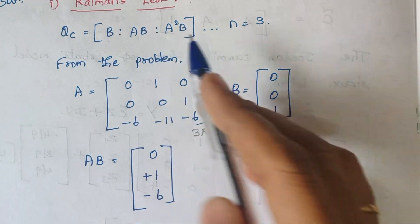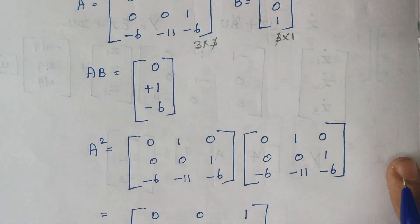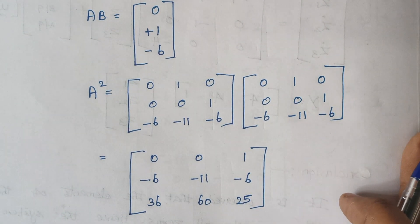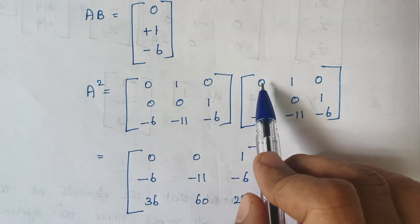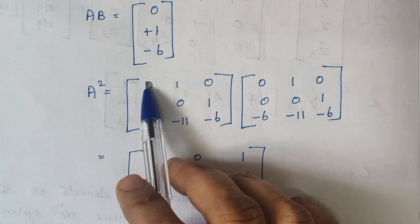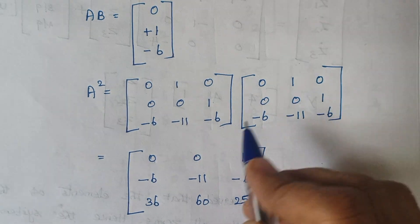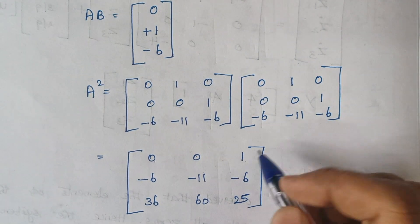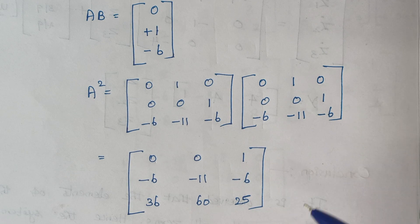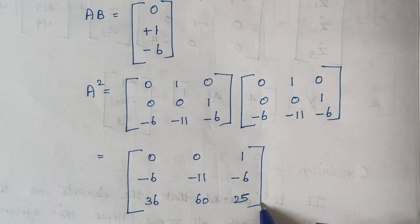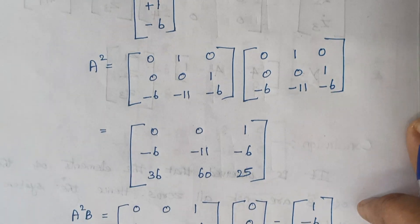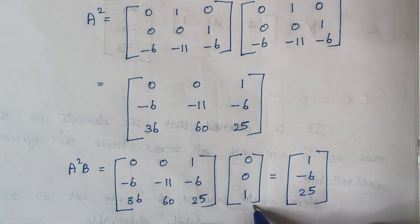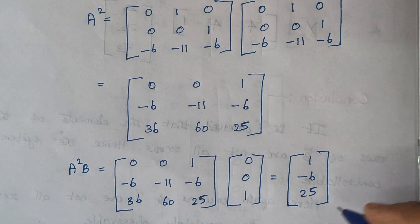The next step is to calculate A²B. First we calculate A², which is A into A. Using matrix multiplication, each row is multiplied with the corresponding column to produce each element. After computing A², we multiply by B to get the value of A²B.